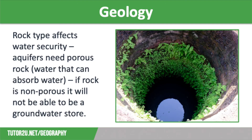Our second cause of water insecurity is geology. The type of rock in an area is an important factor in regards to water security. Aquifers need porous rocks — these are rocks that can absorb water. And if a rock is non-porous, it will not be able to be a groundwater store. This means if an area is dominated by non-porous rock, they will have a limited water supply.